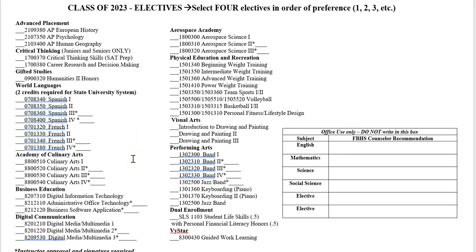Culinary arts with Chef Gass is a very popular class. Remember that if students have taken culinary one and want to take culinary two the following year, that is our culinary block. Students take culinary two and culinary three at the same time, which uses up both of their elective choices — so if you go into that class, you're done with your electives right then and there.